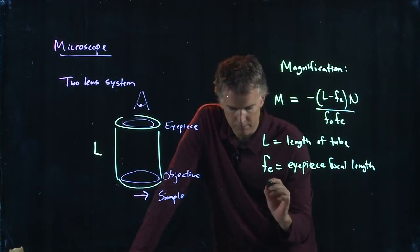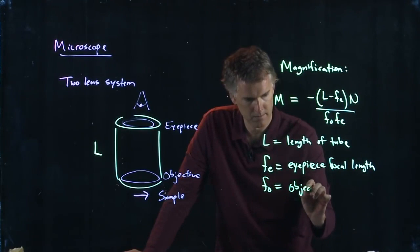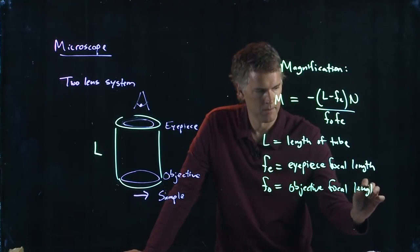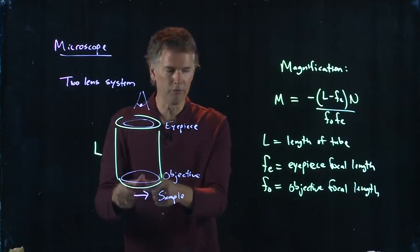FO is the focal length of the objective. Okay, so that's the thing on the bottom and usually you can rotate different ones and they'll say like 16x, 20x, 100x, right, those are also very short focal length lenses and they sit very close to the sample.